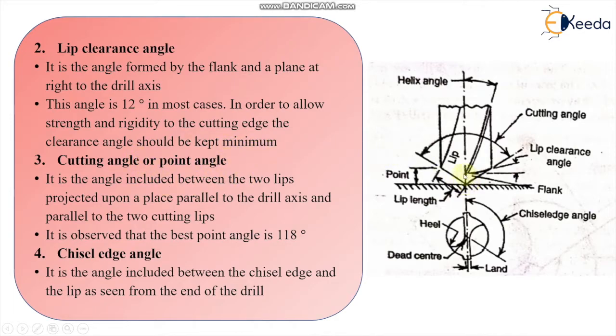This is the cutting angle, this is the cutting angle, you can see here, this bigger one. This is the cutting angle or it is also known as the point angle, or lip angle also. It is the angle included between the two lips projected upon a place parallel to the drill axis and then parallel to the two cutting lips. This is actually the included angle of the cutting lips. This is the cutting edge angle. It is observed that the best point angle is 118 degrees for hard materials. For soft materials like aluminum, copper, we can have the values around 45 to 60 degrees also.